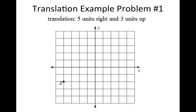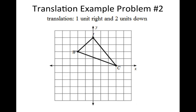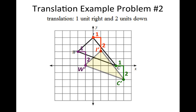Let's do another example. Take point X and move it five units to the right and three up - move five to the right and three up, and there's X prime. Here's another problem: we have a triangle and have to move one unit to the right and two units down. Move one to the right and two down for each point - call it I prime, C prime, and W prime. Draw the new triangle. You can see it's just been slid one to the right and two down, with no change in orientation.